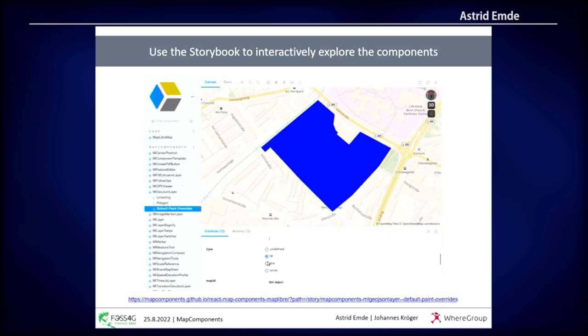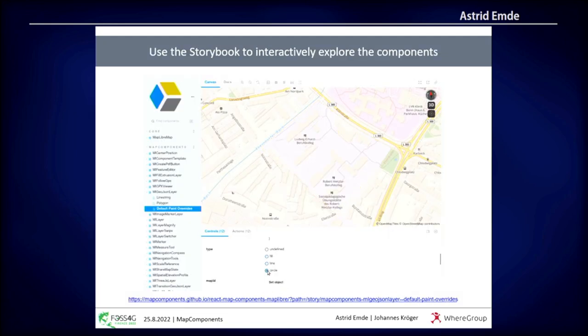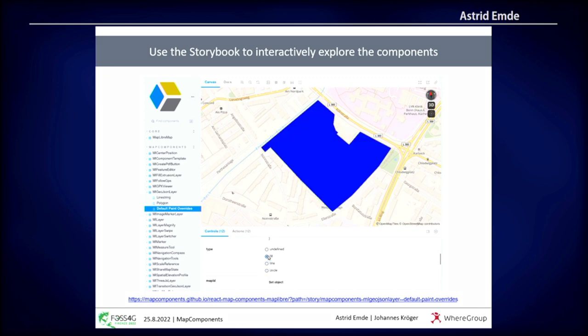If you know React, you might know Storybook. There are lots of components — we have standard GeoJSON layers, different kinds of other components like markers and measure tools. In the Storybook, you can look at our components, try them, and reuse them for your own purposes. Here you see, for example, a GeoJSON layer where you just change the paint type, and the map components will reload that layer and do everything in the background that's needed for MapLibre.